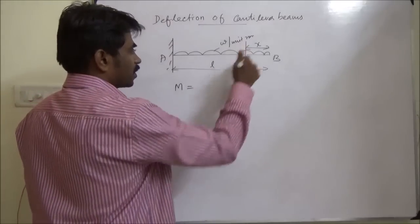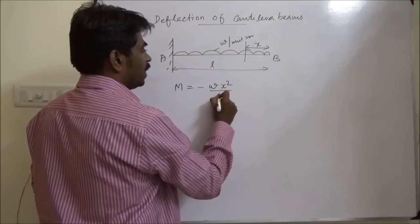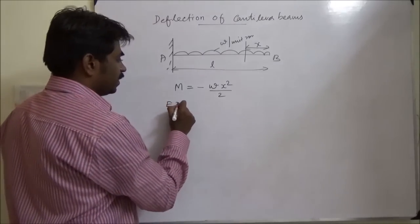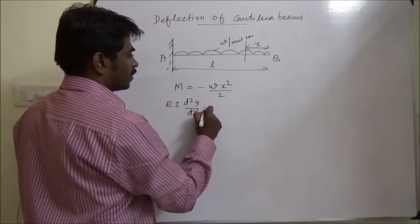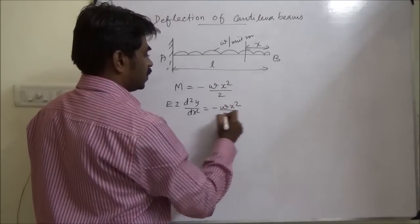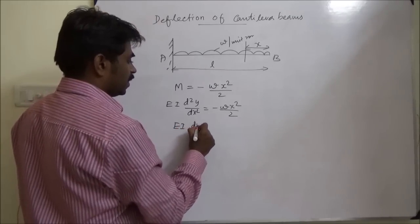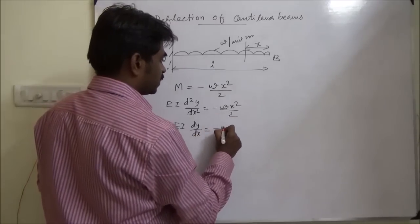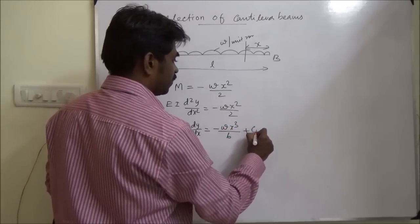W times X squared by 2. So, EI d²y/dx² equals Wx²/2. Integrating this: dy/dx equals minus Wx³/6 plus C1.